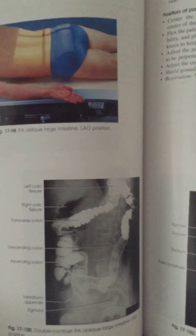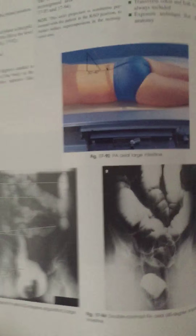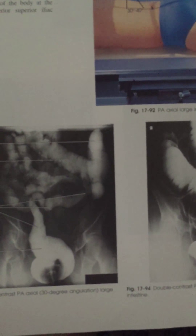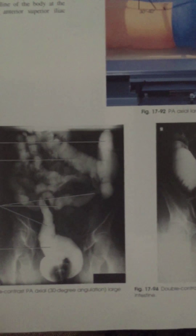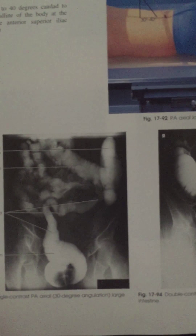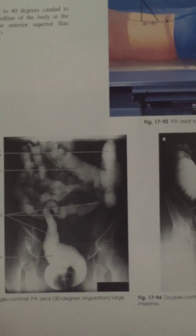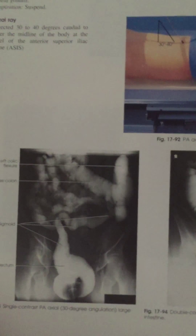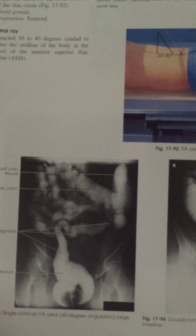After the LAO I did a PA axial — that's my fifth image. You want evidence of proper collimation, the recto-sigmoid area centered to the image, using a 10 by 12 inch IR. The recto-sigmoid area should have less superimposition than in the PA projection due to the 30 to 40 degree caudal angulation of the central ray. The transverse colon and both flexures are always included, plus an exposure technique that shows the anatomy.